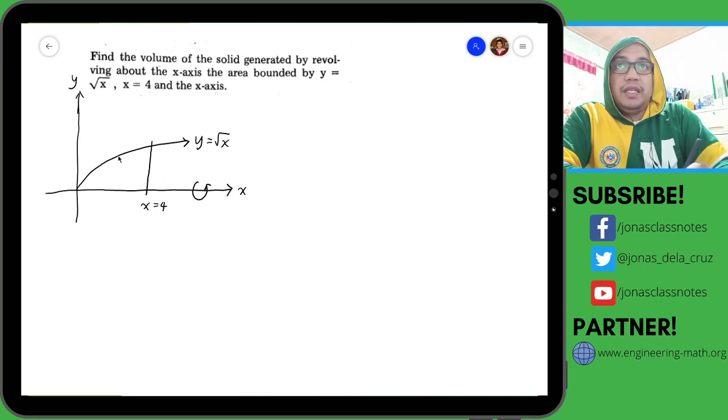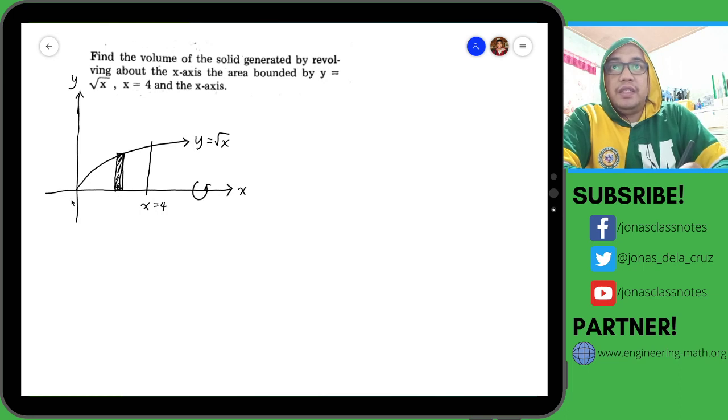What we do is construct a rectangle, and this rectangle is what we rotate - one rectangle we rotate from x equals 0 to x equals 4.